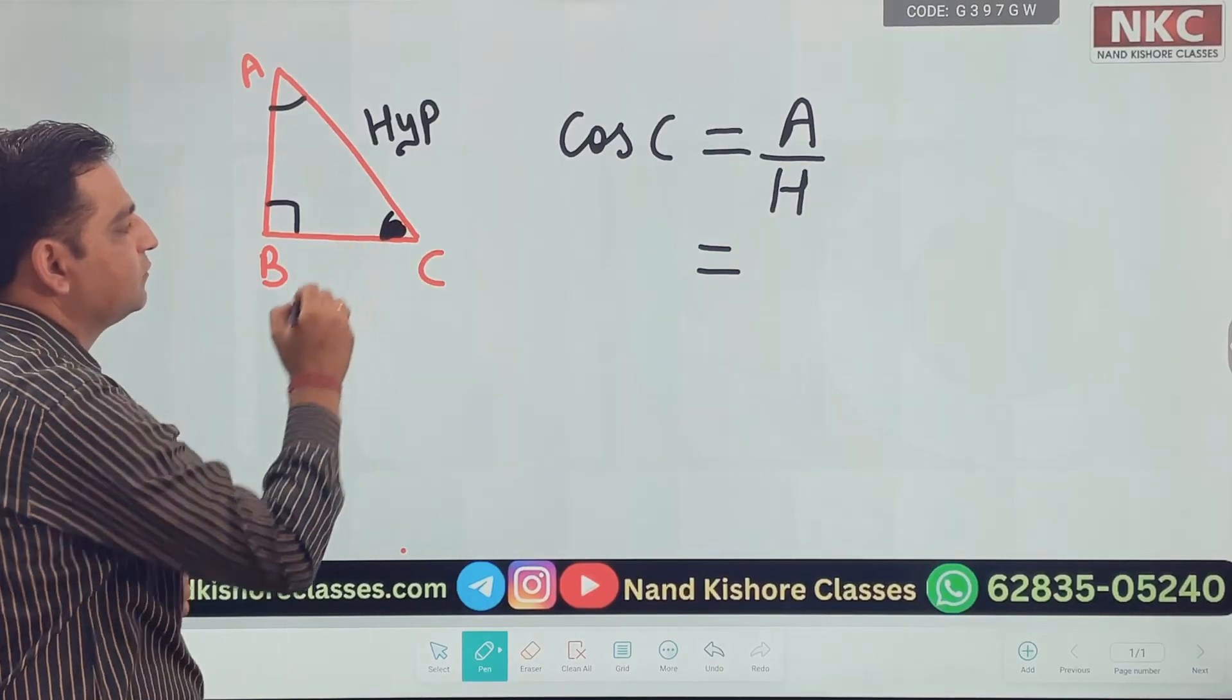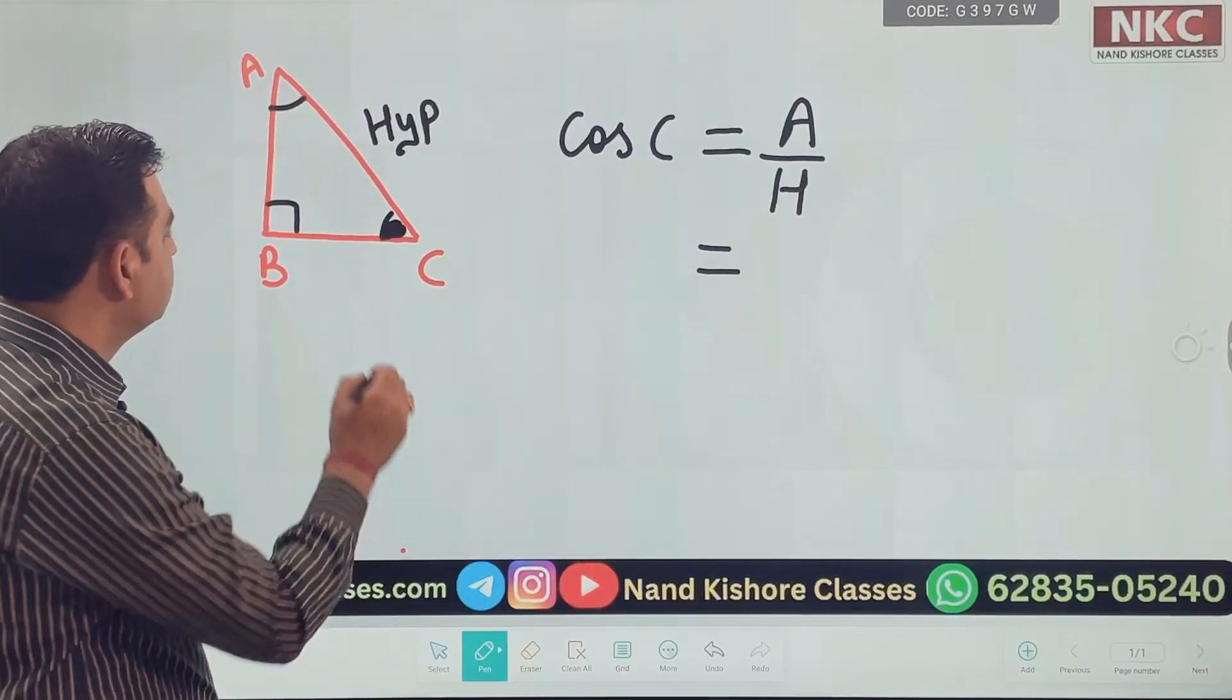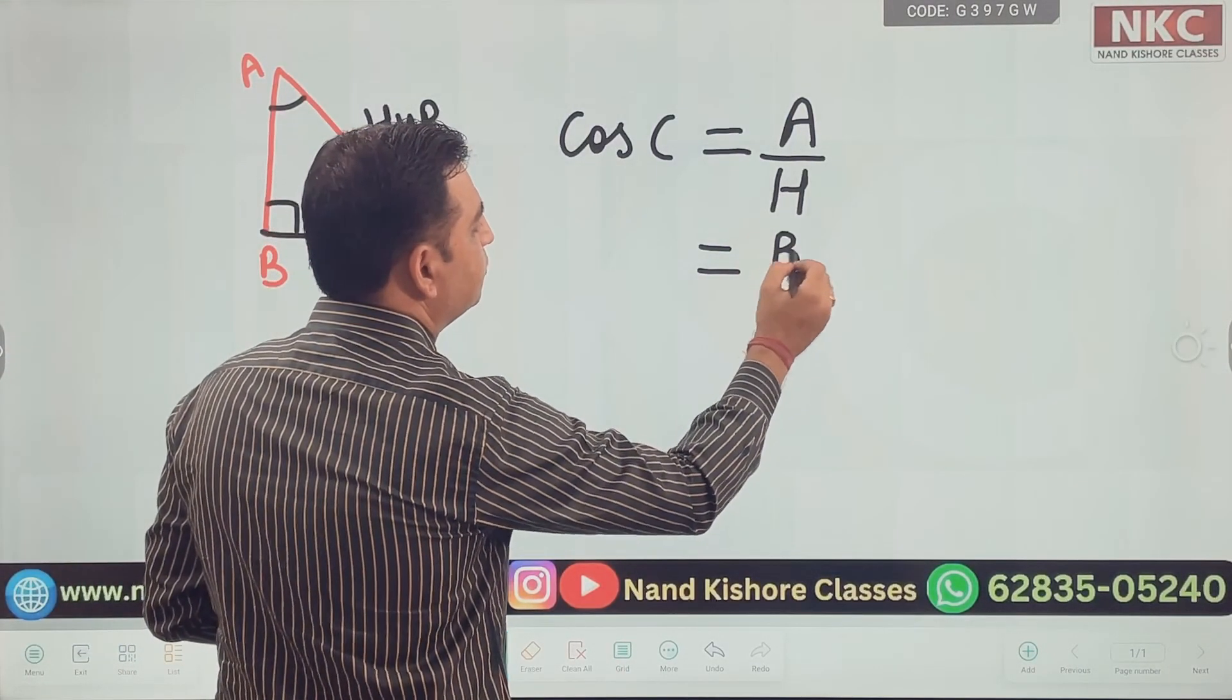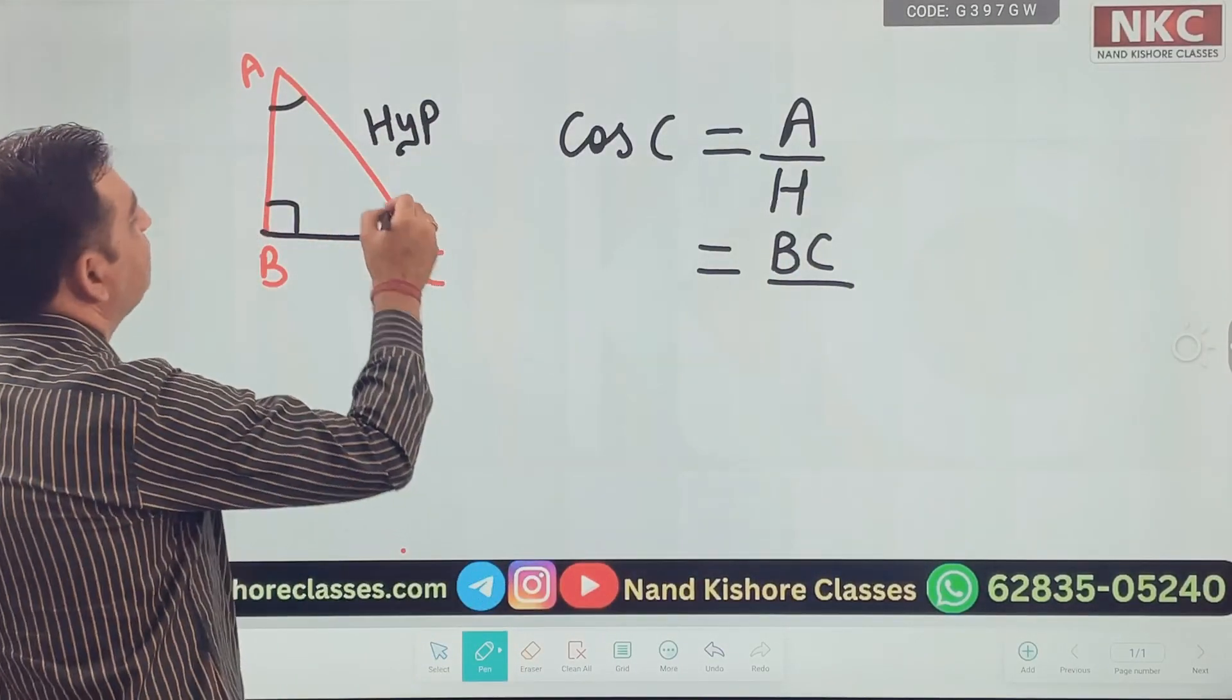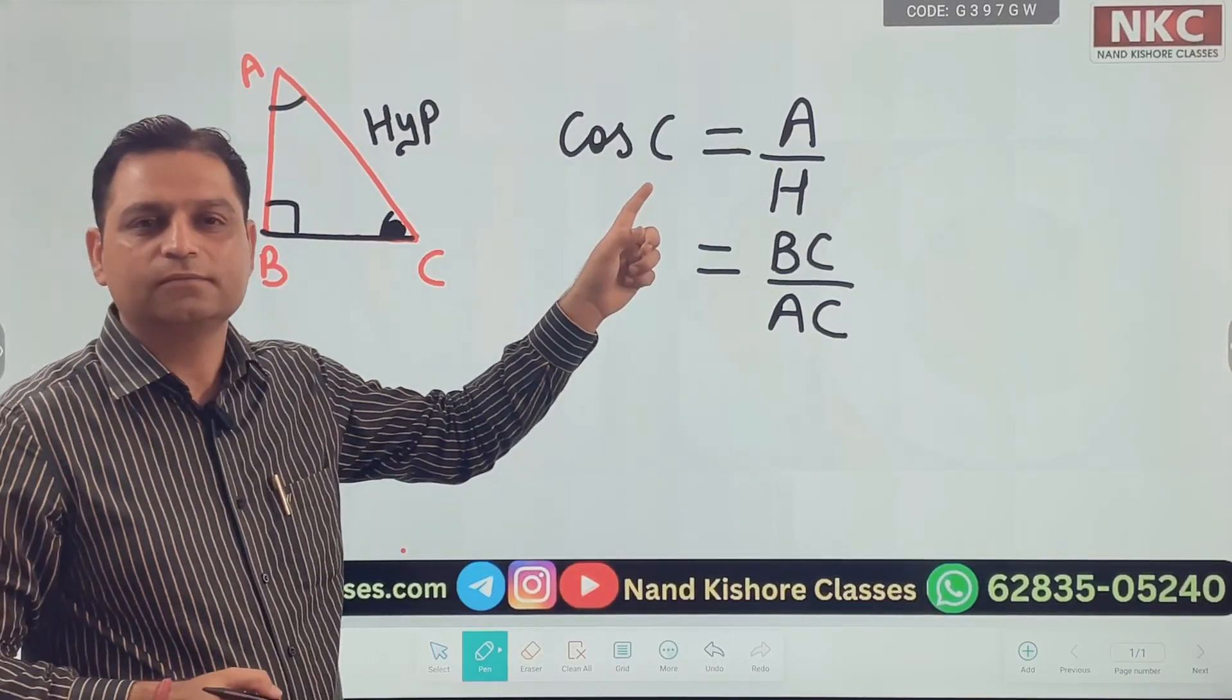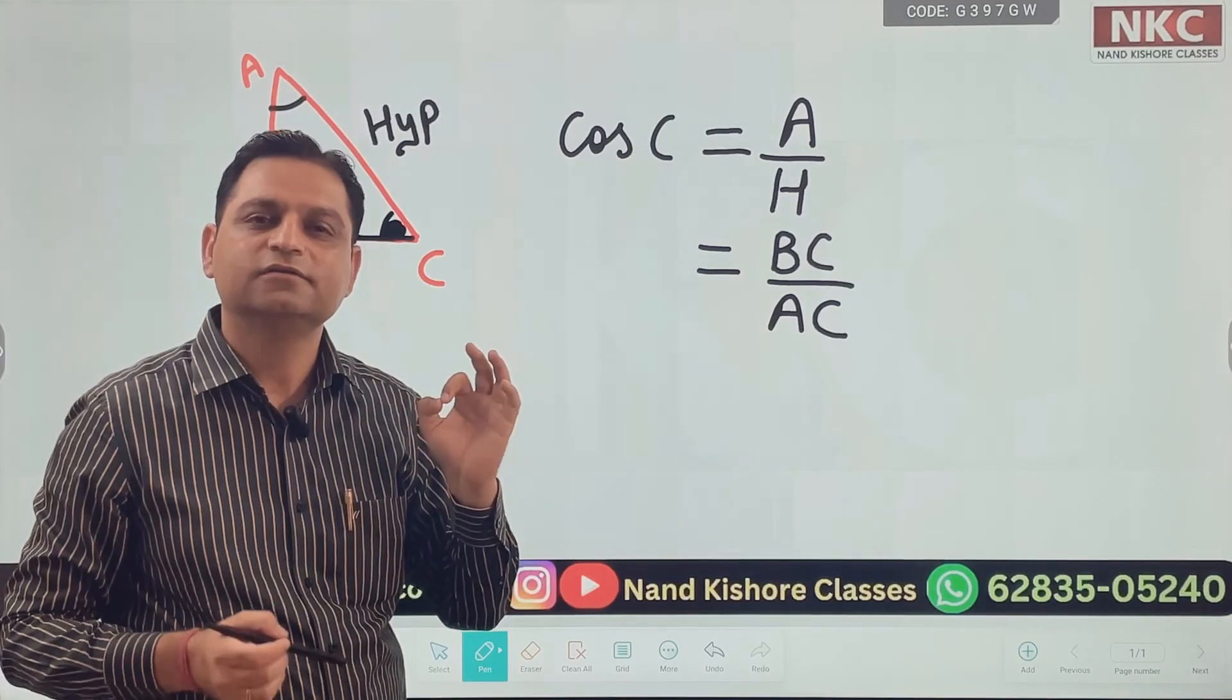So you can see, this is angle C. Which side is adjacent to it? Adjacent means next to angle C, which is this one, BC. So, my adjacent is BC here. Hypotenuse remains AC. That is why I said angle plays a vital role. According to angle, opposite and adjacents are selected. I hope you are clear with trigonometric ratios.